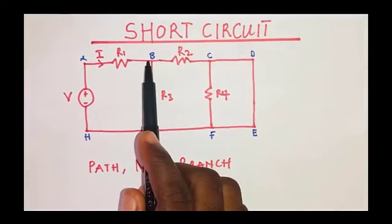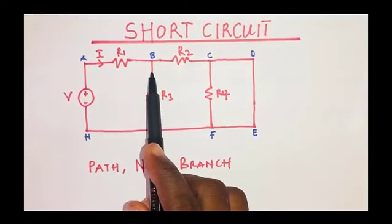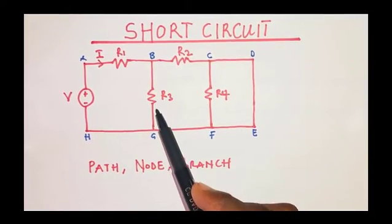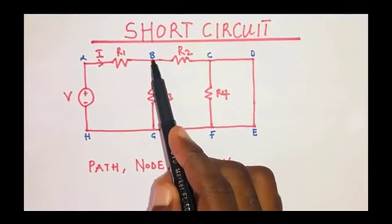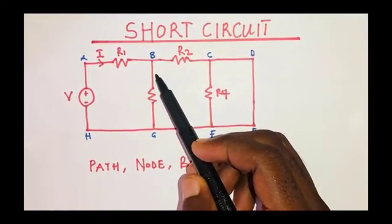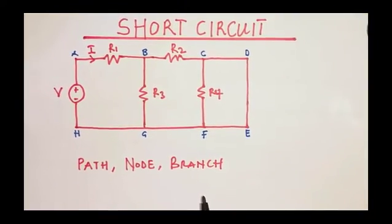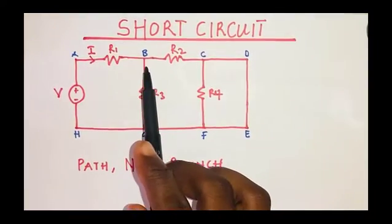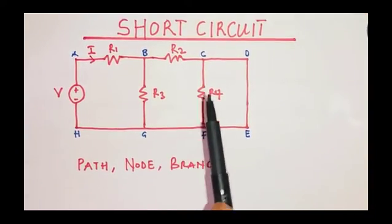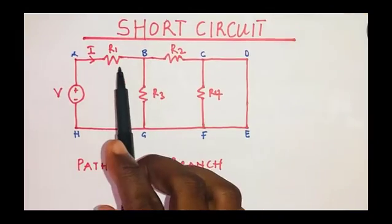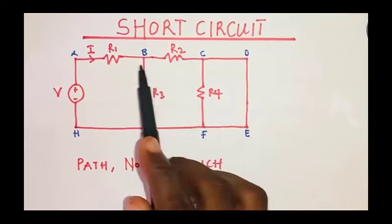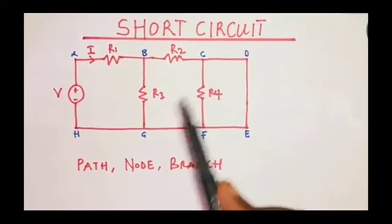A node refers to a point where currents split or divide. As the current approaches junction B, the current divides and flows through R2 and R3. The point where current divides or adds up is the node. A branch refers to a connection or path between two nodes.